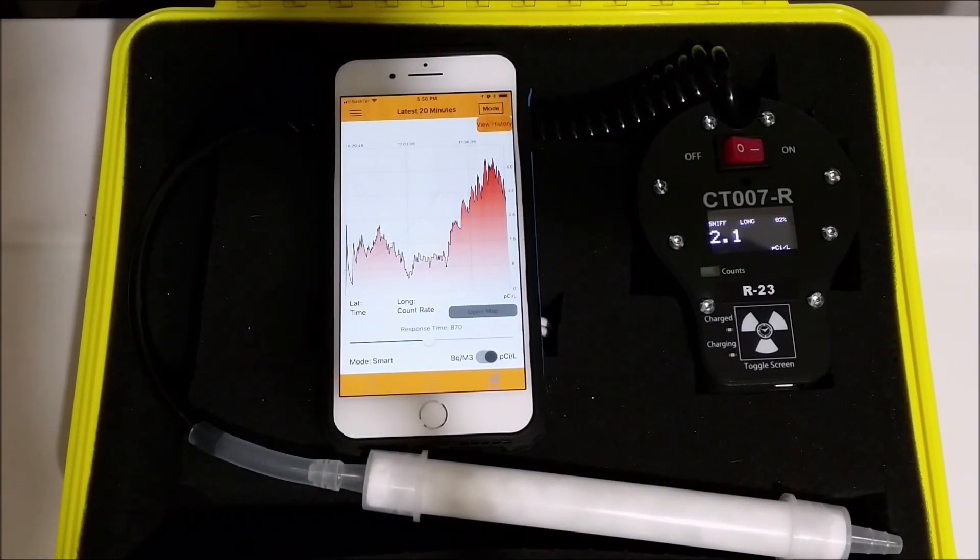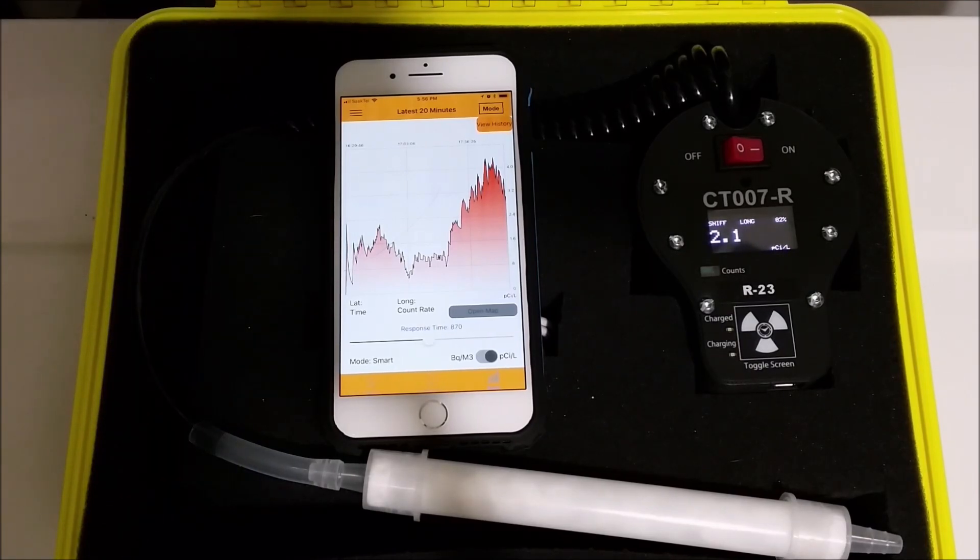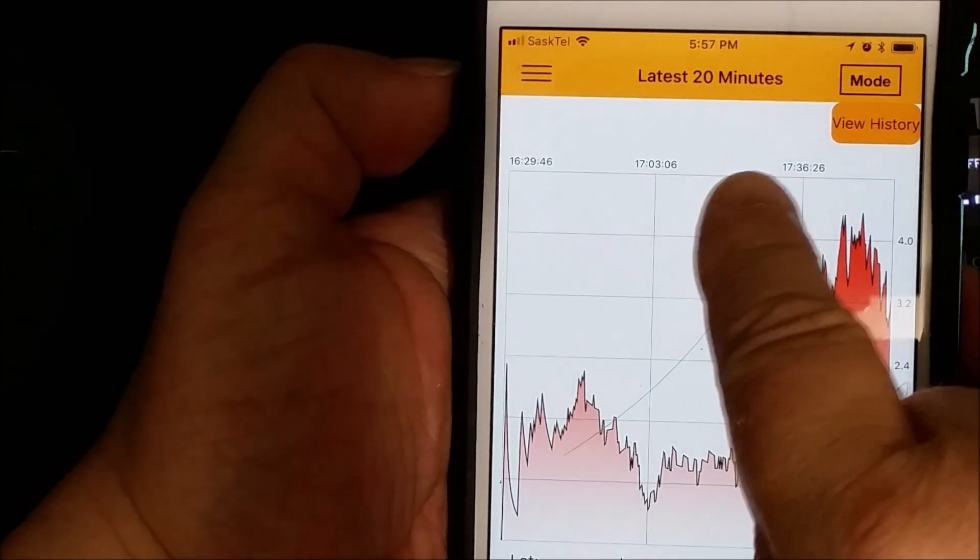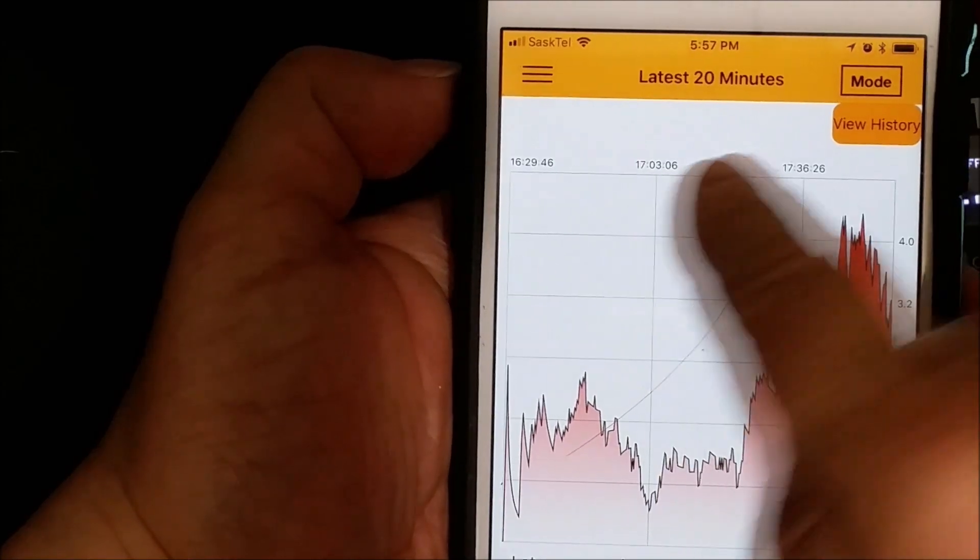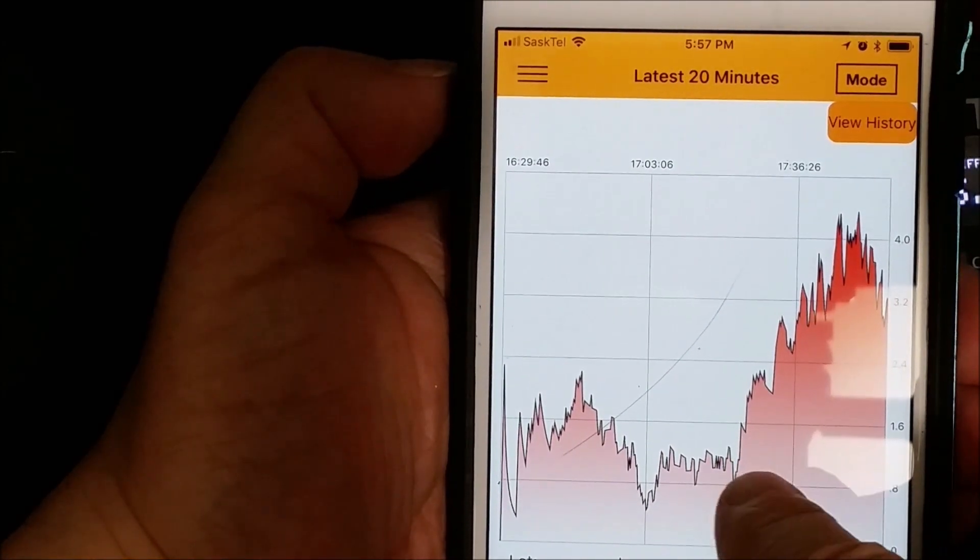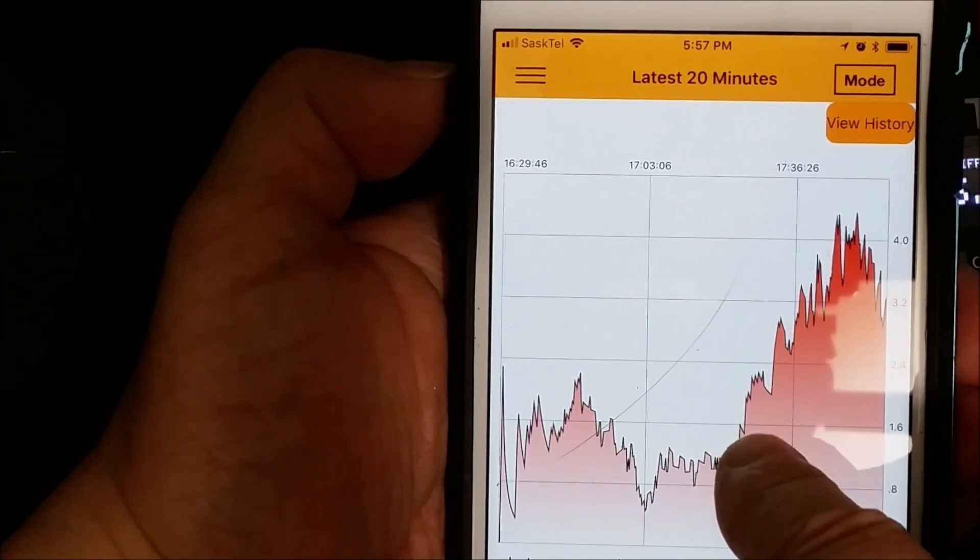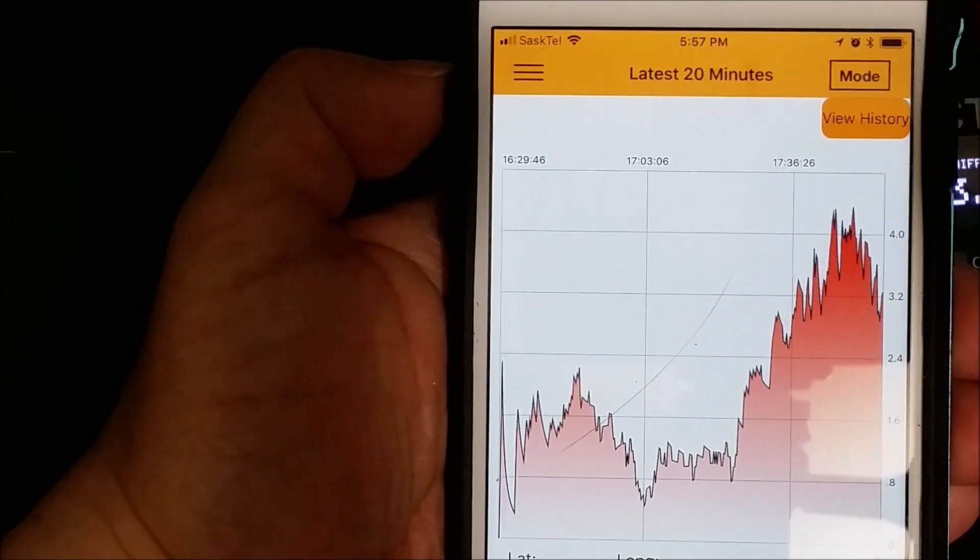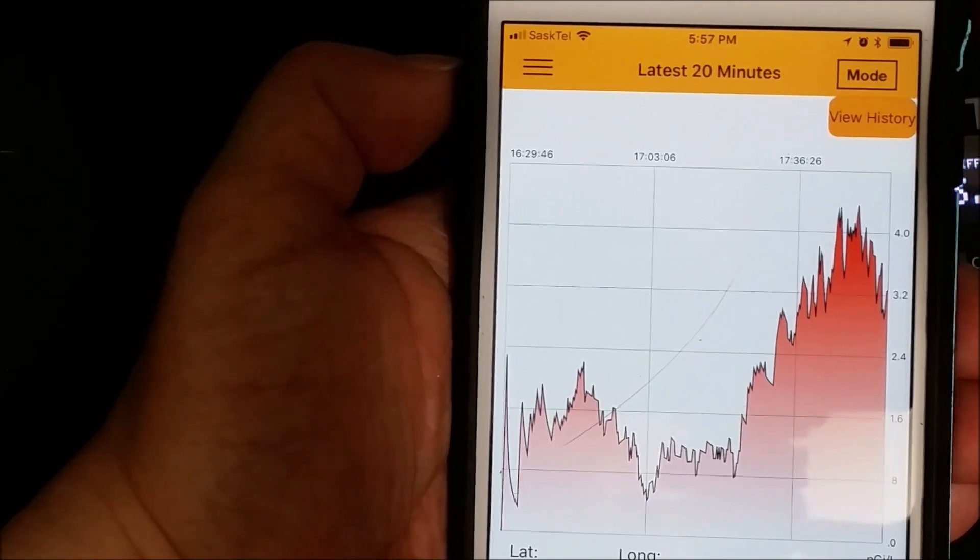The graph does confirm that the radon levels have increased since the detector was moved into the basement. The detector has moved into the basement at about 5:20 PM, the same time the readings on the graph increased. With this information, we can see that there is an actual increase in radon levels in the basement, not just a fluke on the local display.